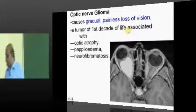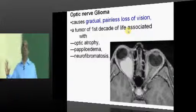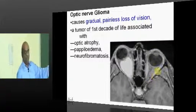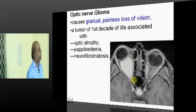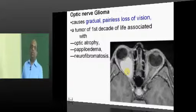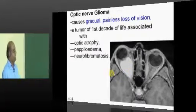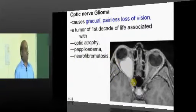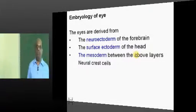The next important entity is optic nerve glioma. Typically in this MRI, you can see this is the normal optic nerve MRI appearance. This is the site where the glioma of the optic nerve is located. Optic nerve gliomas are found in pediatric population in their first decade of life. Sometimes they can be associated with neurofibromatosis and can lead to optic atrophy and papilledema.